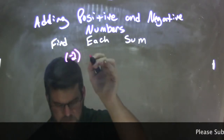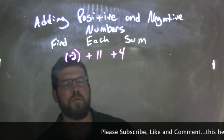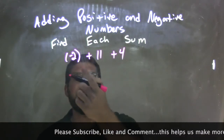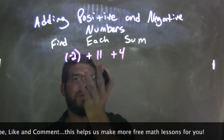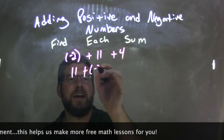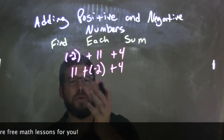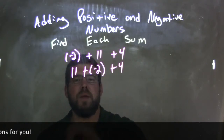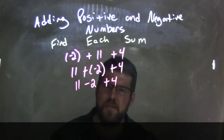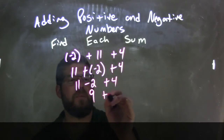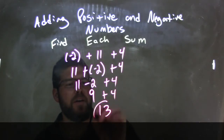Negative 2 plus 11 plus 4. By the commutative property I can switch these, so now I have 11 plus a negative 2 plus 4. 11 plus a negative 2 is the same thing as 11 minus 2 plus 4. 11 minus 2 is just 9, and we add 4 to that. 9 plus 4 comes out to be 13, which is our final answer.